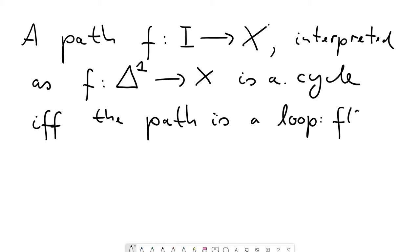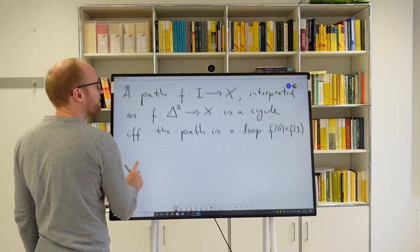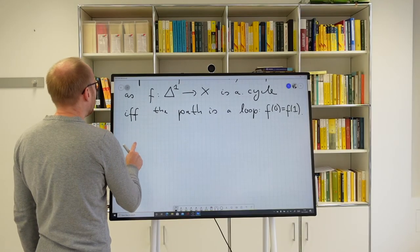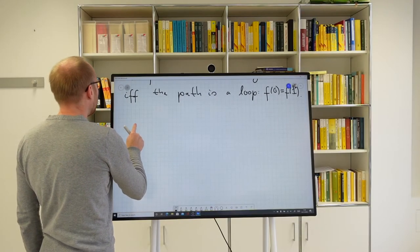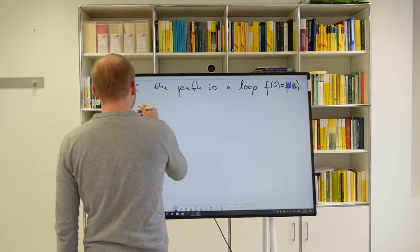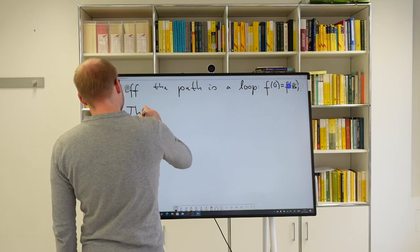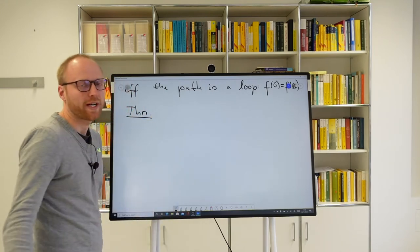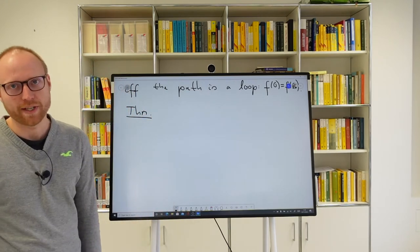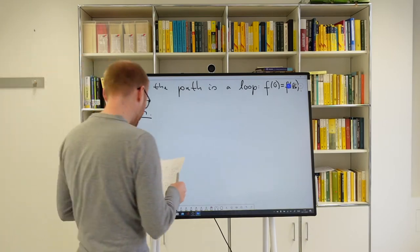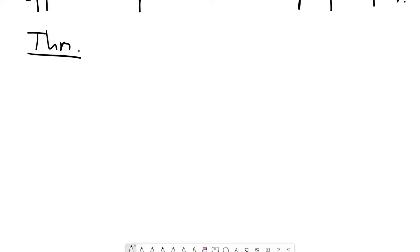This means f(0) equals f(1) — the same point in X — i.e., the path is a loop. This very easy remark allows one to formulate the theorem which clarifies the relation between the fundamental group and the first singular homology. That theorem is called the Hurewicz theorem, here in degree one.